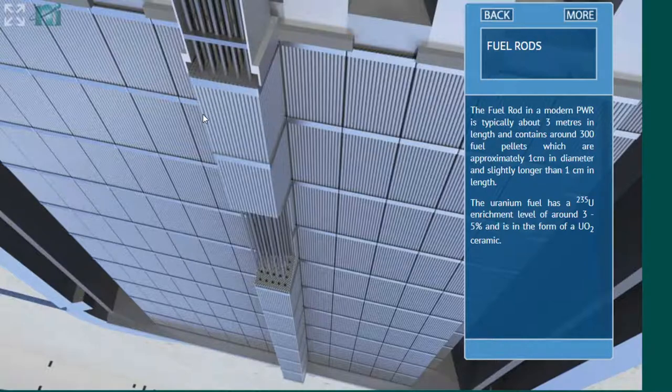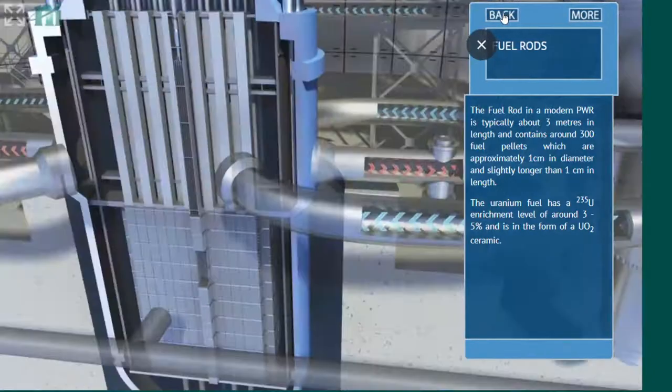There are 300 fuel pellets in each one of the fuel assemblies. Fuel pellet is a little pill of fuel inside the zirconium cladding. So these tubes we see here are made of zirconium and fuel pellets are inside. The enrichment is around 5%, between 3 and 5% of uranium-235. Let's go to the next, which will be control rods.